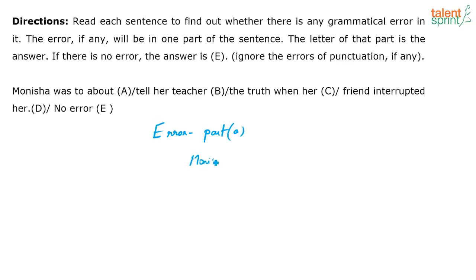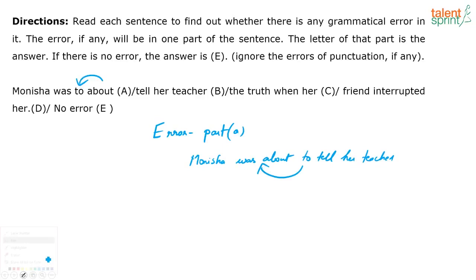The error is in part A and not part B. If I interchange — Manisha was about to do something, what is that? To tell her teacher. So all I have to do is interchange: about comes before 'to' and not the other way around. So 'Manisha was about to tell her teacher the truth when her friend interrupted her at that time.' This is an error pertaining to word order. Nothing is wrong with part B.